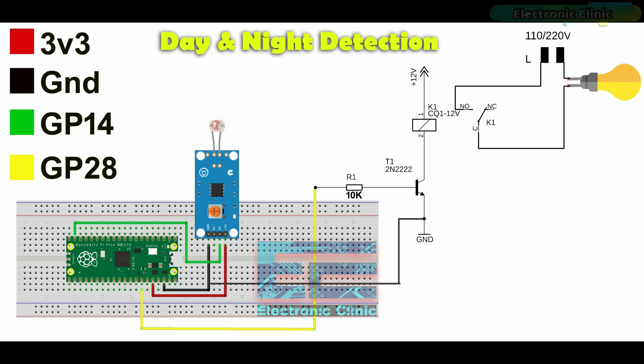The one channel relay module is controlled using the GP28 pin of the Raspberry Pi Pico. You can follow these connections if you want to make your own relay module, or you can use a ready-made relay module.